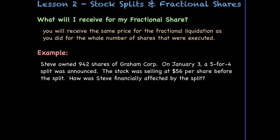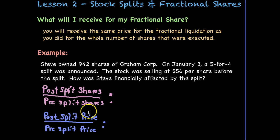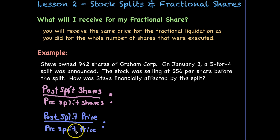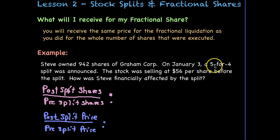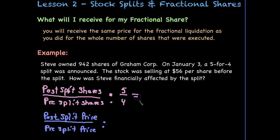In order to solve this, we need to create our fractions and set up our proportional ratios. I've written out post-split shares over pre-split shares, as well as post-split price over pre-split price. This helps us organize our thoughts. For a 5-to-4 split, 5 is how many shares we get post-split and 4 is how many we had pre-split — in other words, for every 4 shares, we are getting 5.